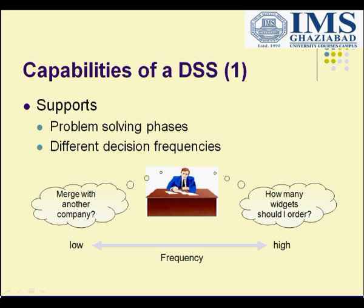The capabilities of DSS are as follows. It supports problem-solving phases and different decision frequencies that can be low or high. For example, low decision frequency — if you want to merge with another company, that is a low decision frequency. High decision frequency would be something like: how many widgets should I order?